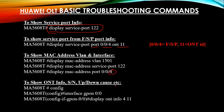To show ONT info including serial number, up/down status, and the cause and time of last down event and up time details, first go to config mode, then enter 'interface gpon 0/0', then use 'display ont info 4 11' — where 4 is the GPON port and 11 is your ONT ID.